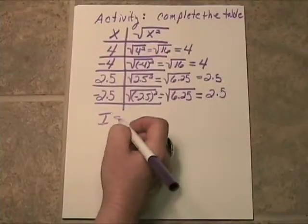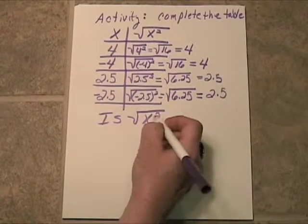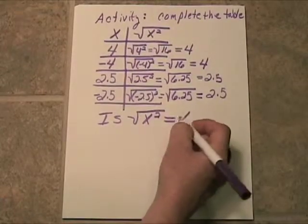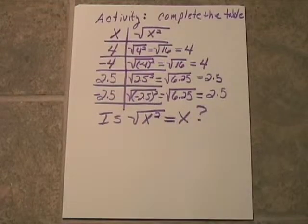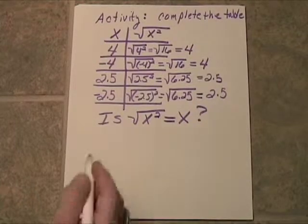So, here's the question. Is the square root of x squared always equal to x? Does square rooting x squared really always give you back the x? Does it always just undo? The answer is no.